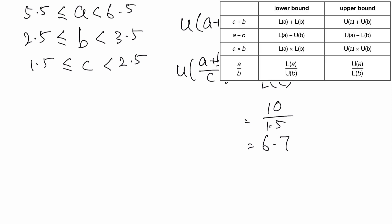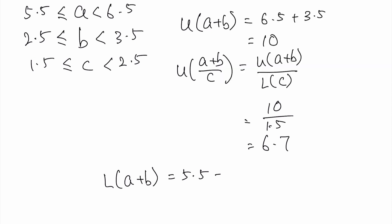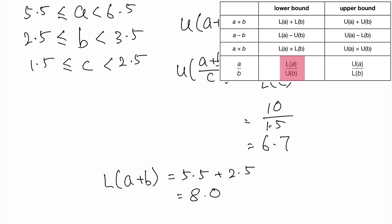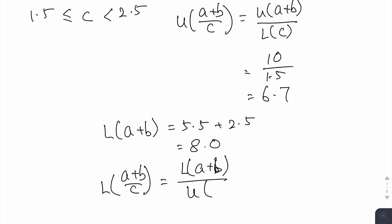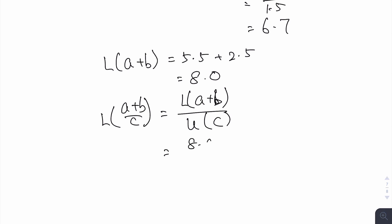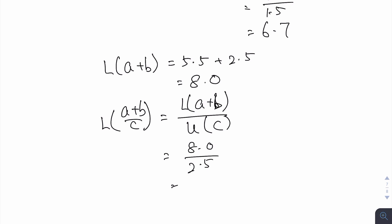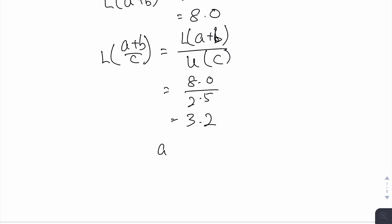Similarly, to get the lower bound of (a + b) over c, use the lower bound of the numerator: the lower bound of a plus b is 5.5 plus 2.5, which is 8.0. To get the lower bound of the fraction, divide by the upper bound of c, which is 2.5. So 8.0 divided by 2.5 equals 3.2. The answer as a statement is: (a + b) over c lies between 3.2 and 6.7.